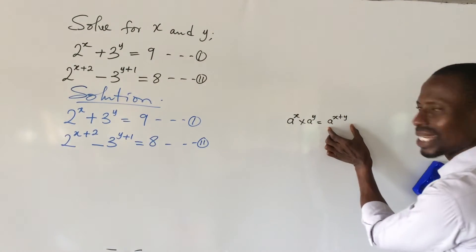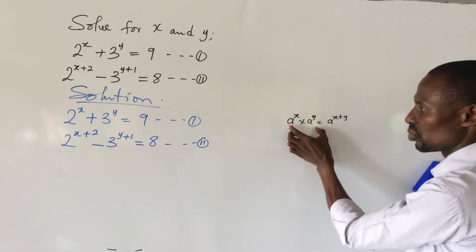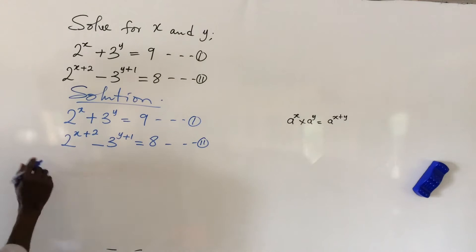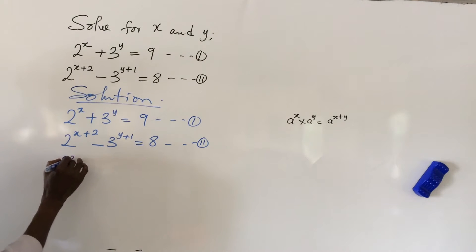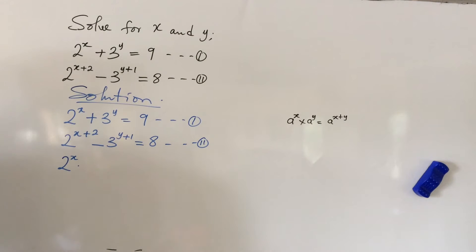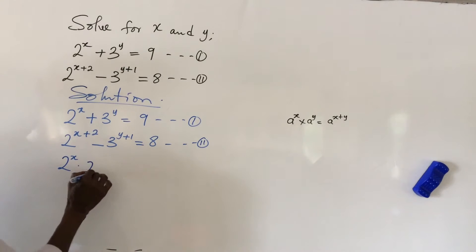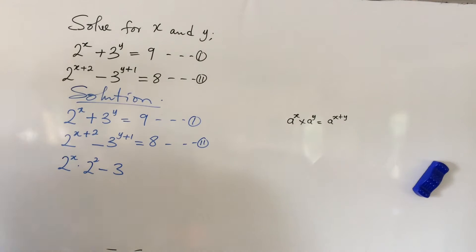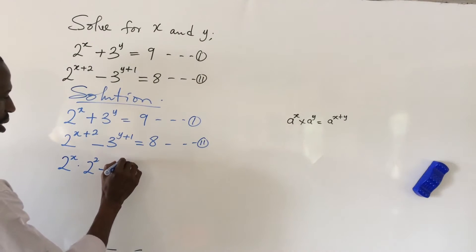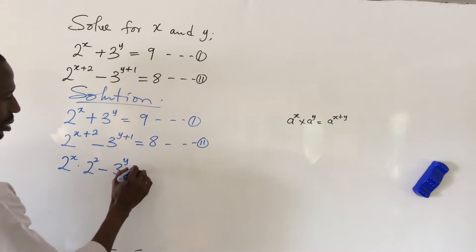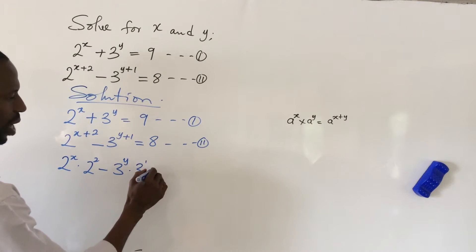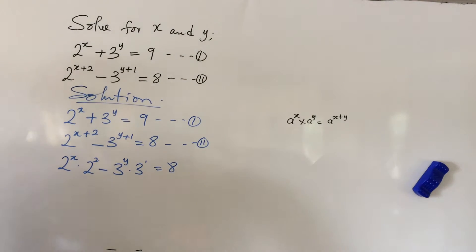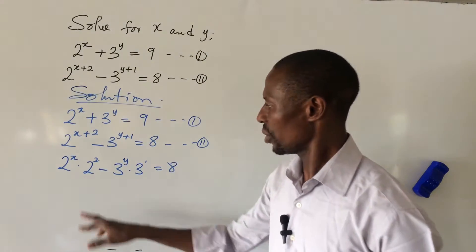This expression is the same as this formula. So we want to take it back to this formula. Hence we can rewrite equation two as: 2 to the power of x times 2 to the power of 2, minus 3 to the power of y times 3 to the power of 1, equals 8.